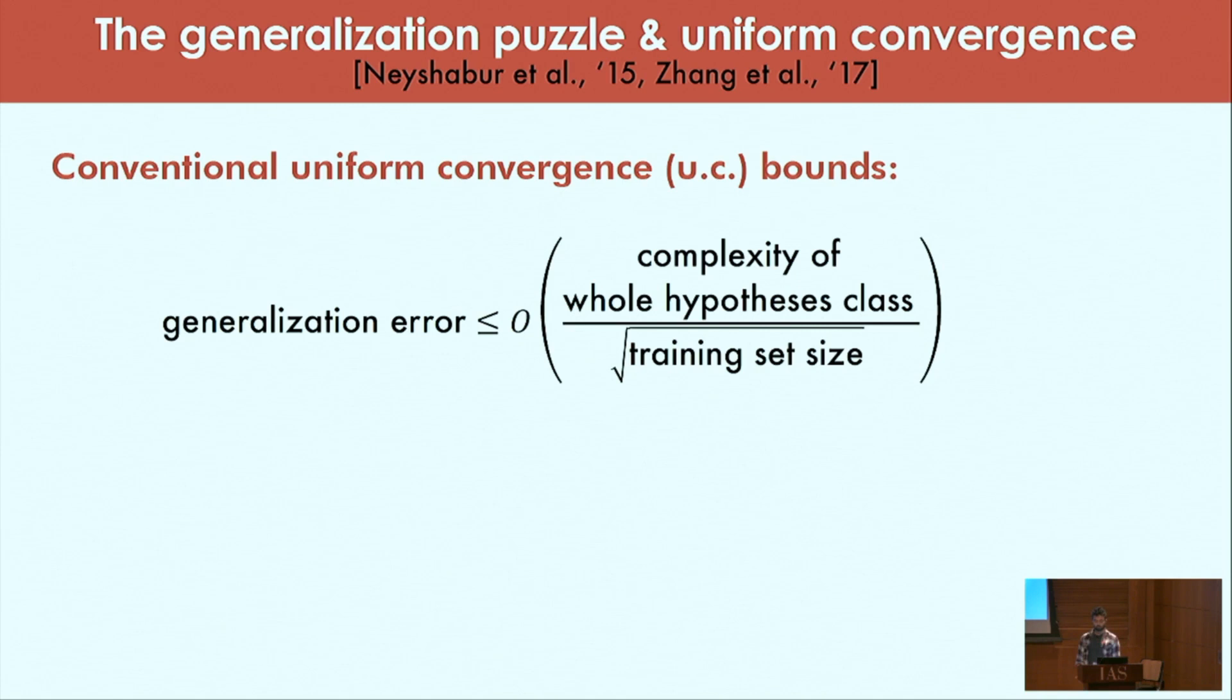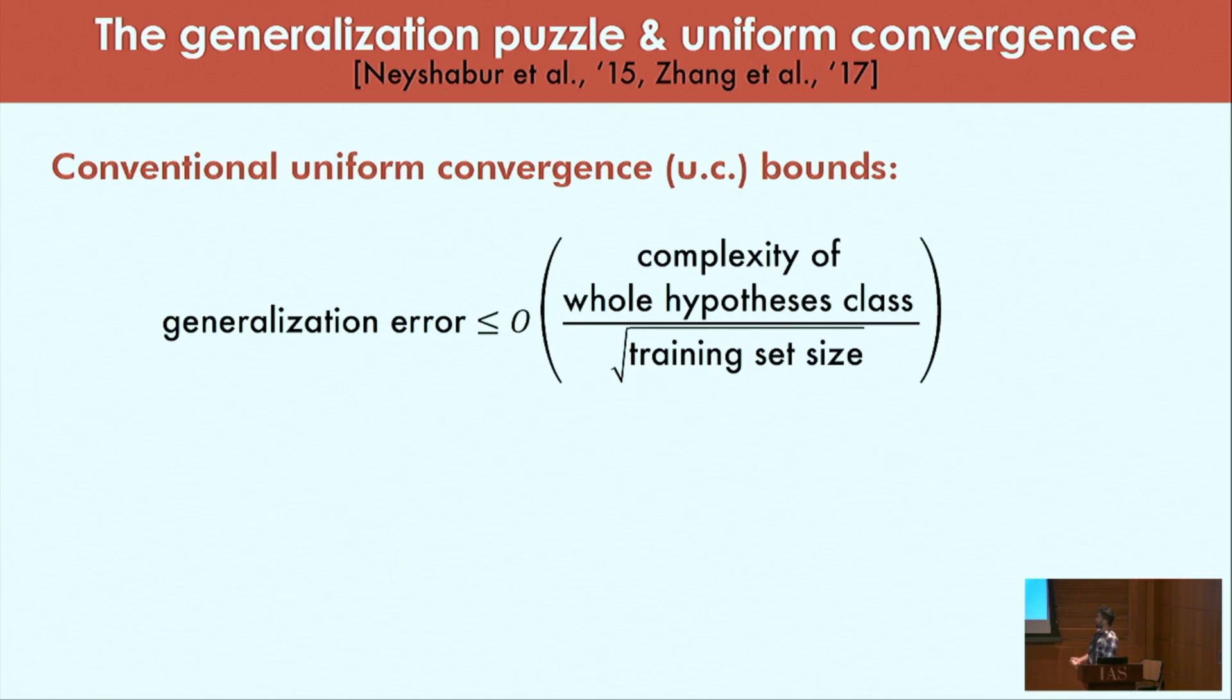What do we know about conventional uniform convergence in the past two years? First, if you compute the standard uniform convergence bound you will end up computing the complexity of all functions in the function class represented by a deep network, and this will be vacuous because it boils down to a parameter count dependent quantity.